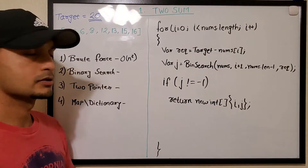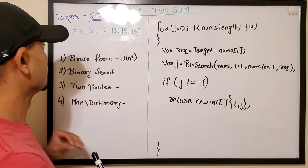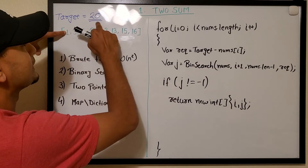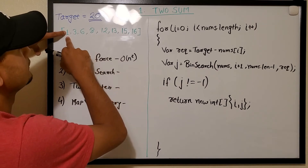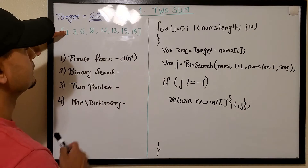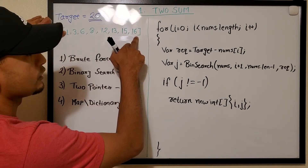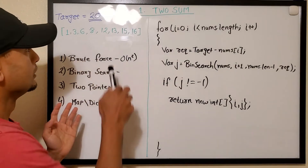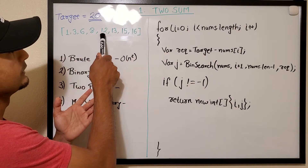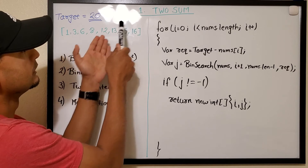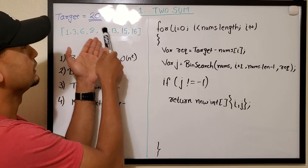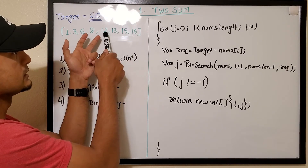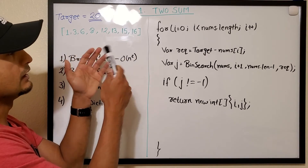The next approach is binary search. We pick one number, say 1, and calculate how much we need to reach target 20 — we need 19. Since the array is sorted, we look up 19 using binary search: check the middle element, go right if the target is greater, go left if smaller. This avoids scanning the whole array.